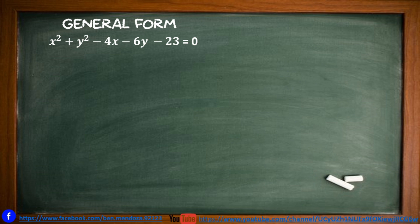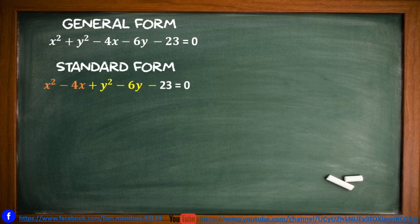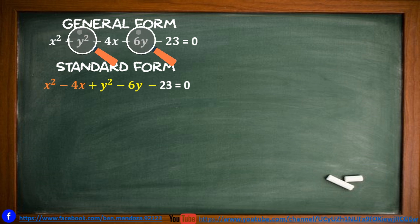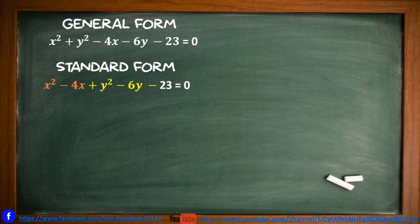Example 3: now we are given an equation in general form and we will convert it to standard form. The first step is to group together terms with similar variables — group x terms together, group y terms together, and isolate the constant. So we have x squared minus 4x plus y squared minus 6y minus 23 equals 0. Then isolate the constant to the right side: x squared minus 4x plus y squared minus 6y equals 23.